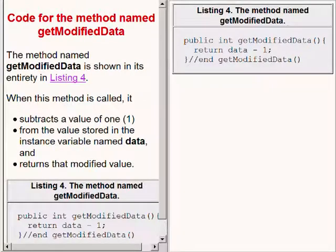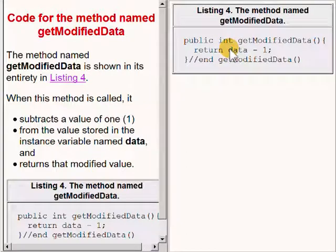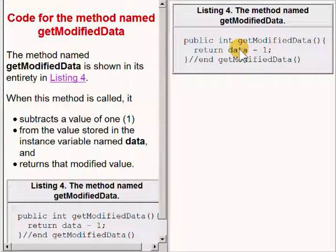The method named getModifiedData is shown in its entirety on the upper right of your screen. When this method is called, it subtracts a value of 1 from the value stored in the instance variable named data and returns that modified value.